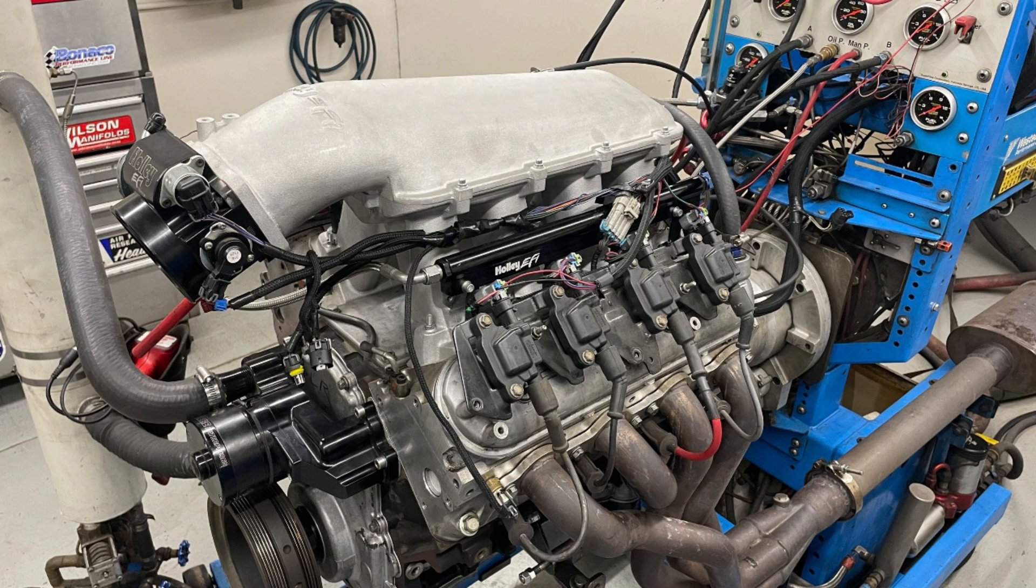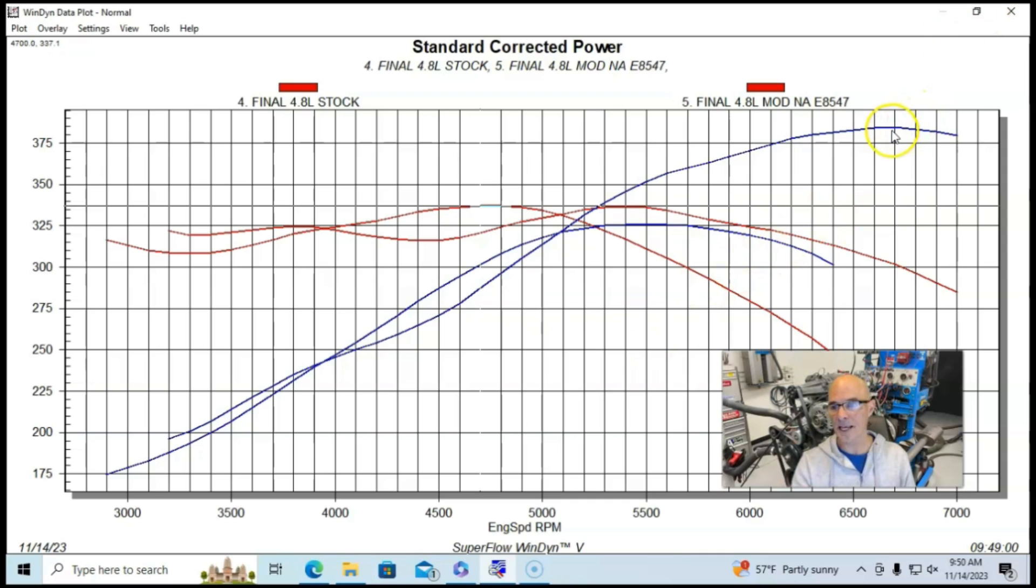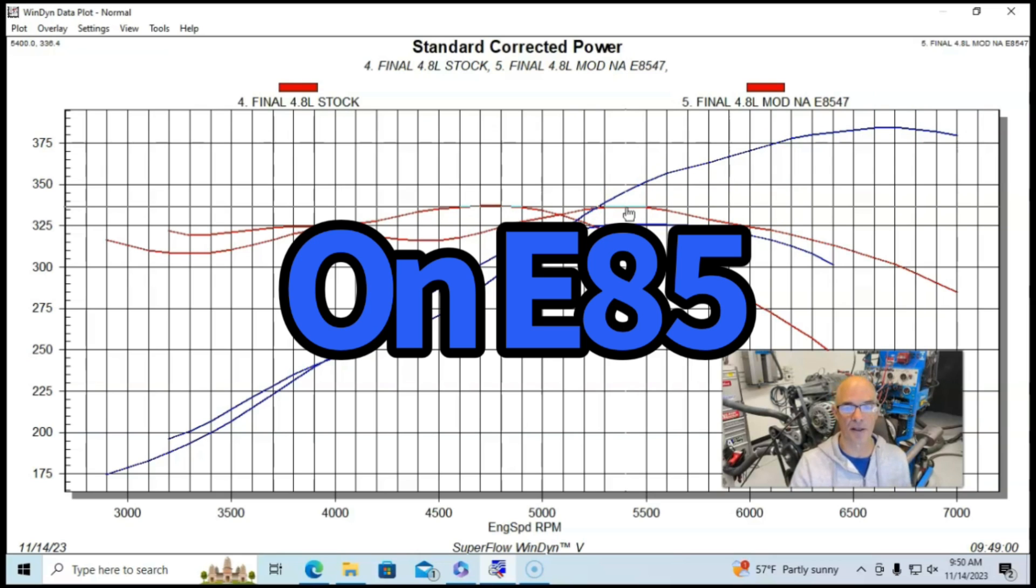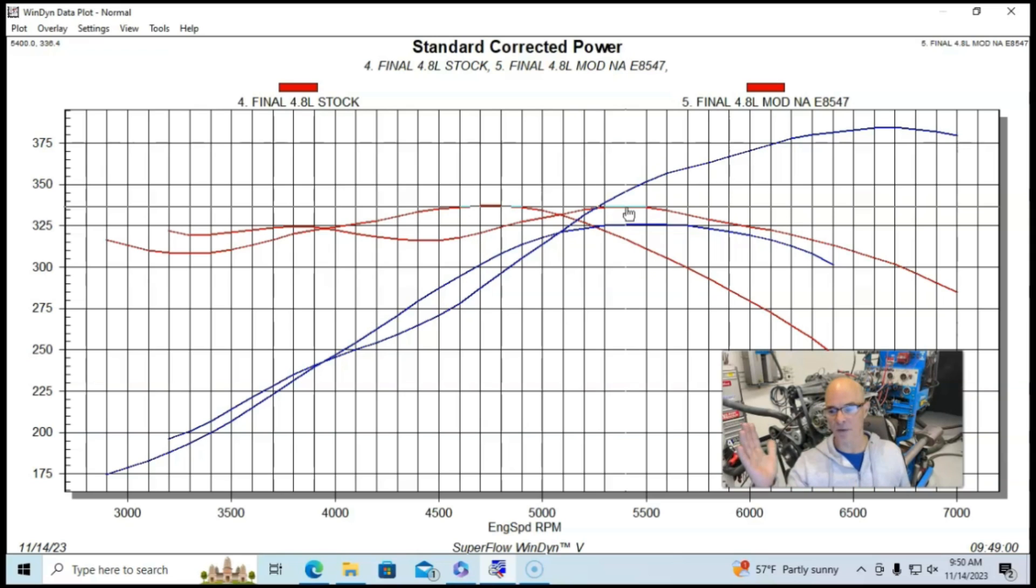Running with our long tube headers, our junkyard 4.8 with the Holley Hi-Ram, 105 millimeter throttle body, and the Brian Tooley Racing Truck Norris NSR camshaft, the NA combination produced 385 horsepower and peak torque checked in at 336 foot-pounds of torque.